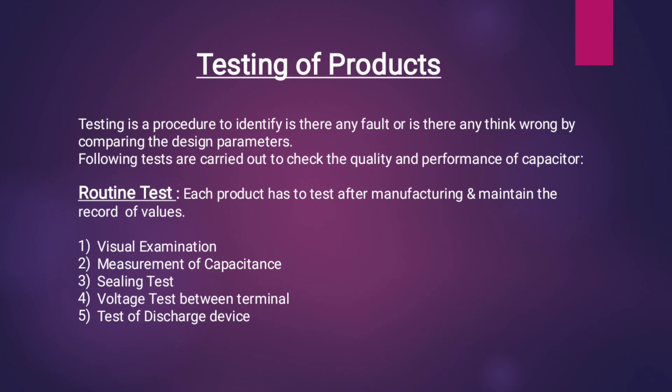Testing of products is very important — it is a procedure to identify any fault or anything wrong by comparing against design parameters. The following routing tests are carried out to check quality and performance: each product must be tested after manufacturing with records maintained. Tests include: first, visual examination; second, measurement of capacitance; third, sealing test; fourth, voltage test between terminals; and fifth, test of discharge device.